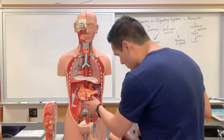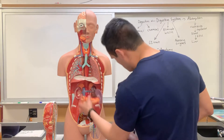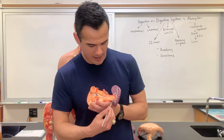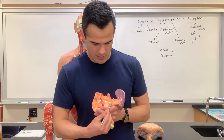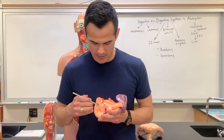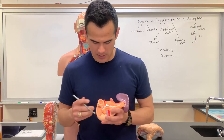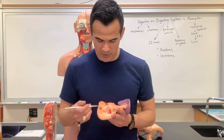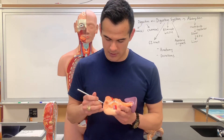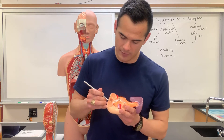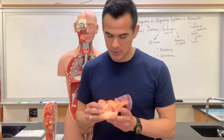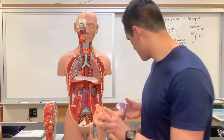Now let's do the pancreas. With the pancreas you have the tail, the body, and then the head of the pancreas. We've already identified the ampulla, and this structure here is known as the papilla.